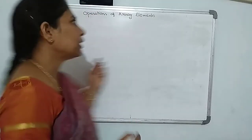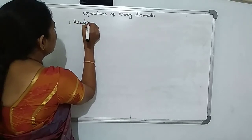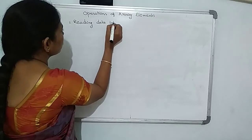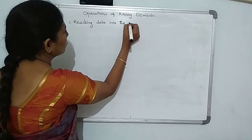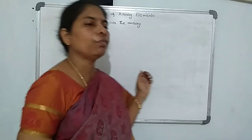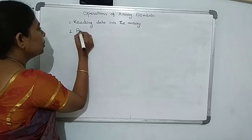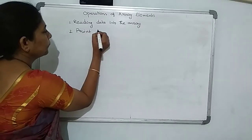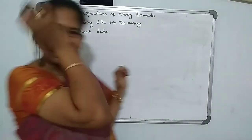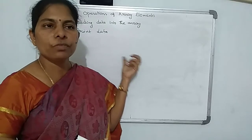The first operation is reading data into the array — we must read the array elements. Next is printing the data. After reading the data, the next operation is printing the data. Reading the elements or printing the data — all are done through for loops only.